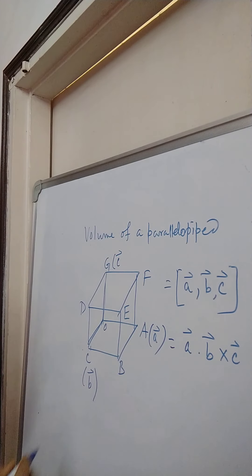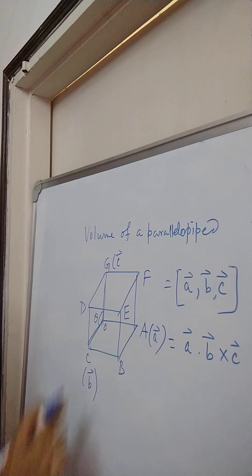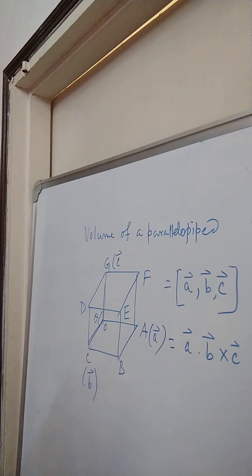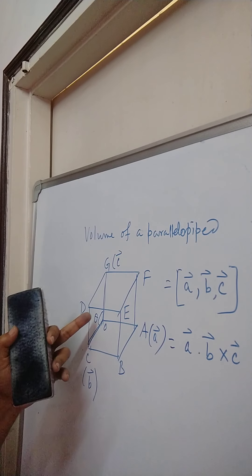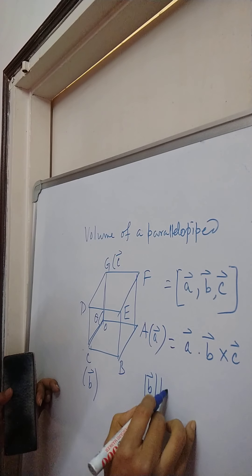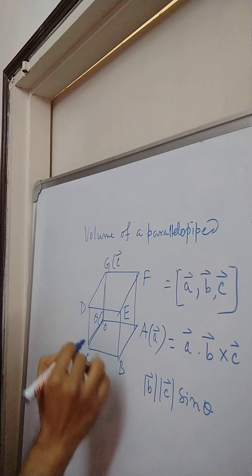Why this area is B cross C? Because this is C and this is B. So obviously, the angle between them is theta. If this is 90 degrees, B cross C becomes B into C, this rectangle. It is obvious. And if it is not 90 degrees, then also B cross C is mod B, mod C, sine theta. So obviously, this area is this.